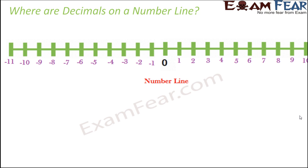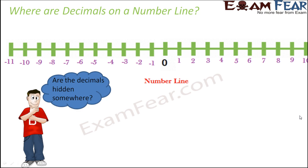All of that can be seen on the number line. But what about the decimal numbers, where are they? Do you think that the decimal numbers are hidden somewhere? Well, not really, but yes, when you look at the number line as such, you do not see them, but these decimal numbers are located in between these integers. So we actually need to locate them.